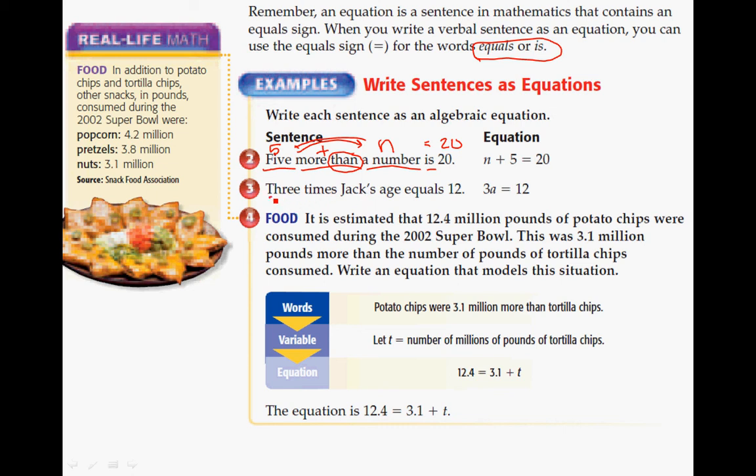Take a look at the other one. 3 times Jack's age equals 12. So 3 times, that means we're going to be multiplying. Jack's age, we don't know what that is, so they use the A, equals 12. And we don't use the X for multiplication. It's just 3 times A equals 12.